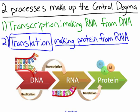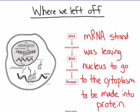So the end goal here is to make protein. Where we left off with the last video, we knew that we made an mRNA strand. The reason why is because DNA cannot leave the nucleus. So we had to make an mRNA strand to send a message out into the cytoplasm where it could be made into protein. So we have an mRNA strand — it is now in the cytoplasm and it's ready to be made into protein.